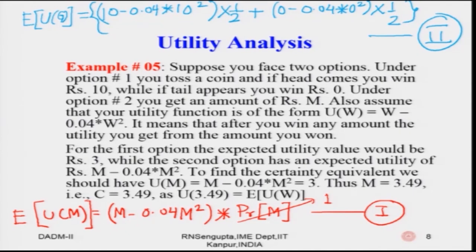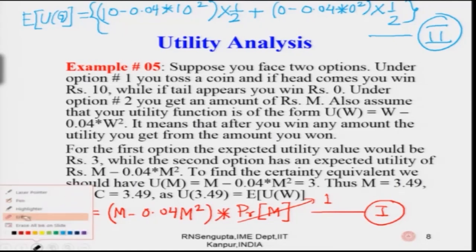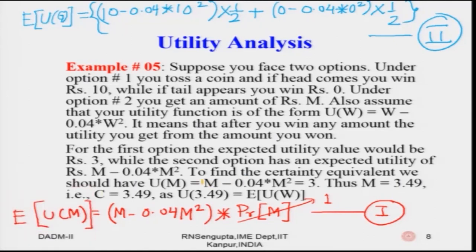The expected utility value for the gamble (Equation 2) works out to 3, while the second option has expected utility M − 0.04·M² (Equation 1). Equating them, M comes out to approximately 3.49. So the certainty equivalent value is 3.49.